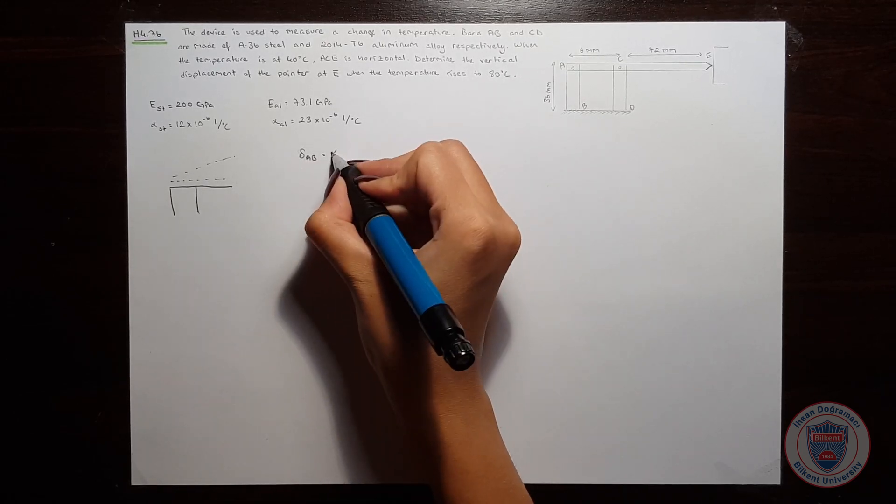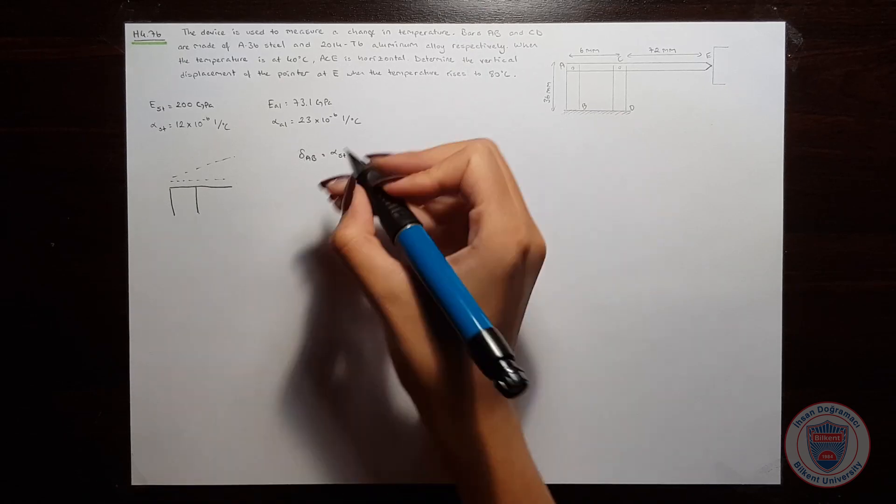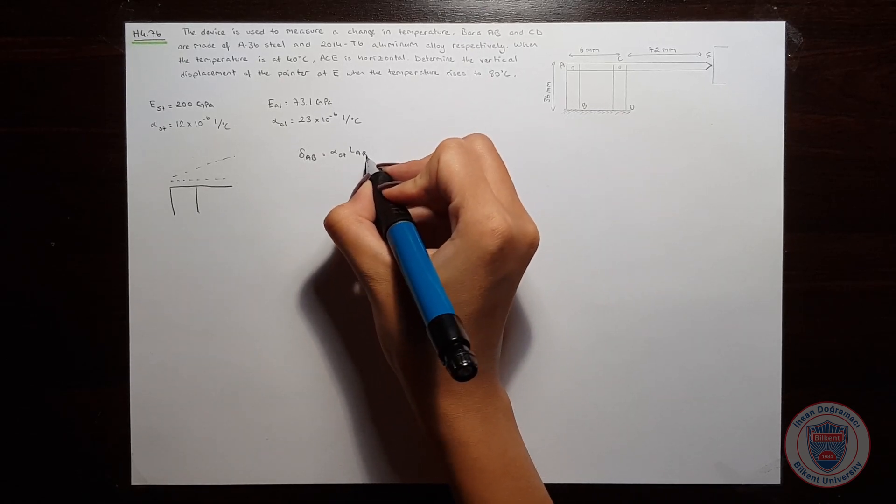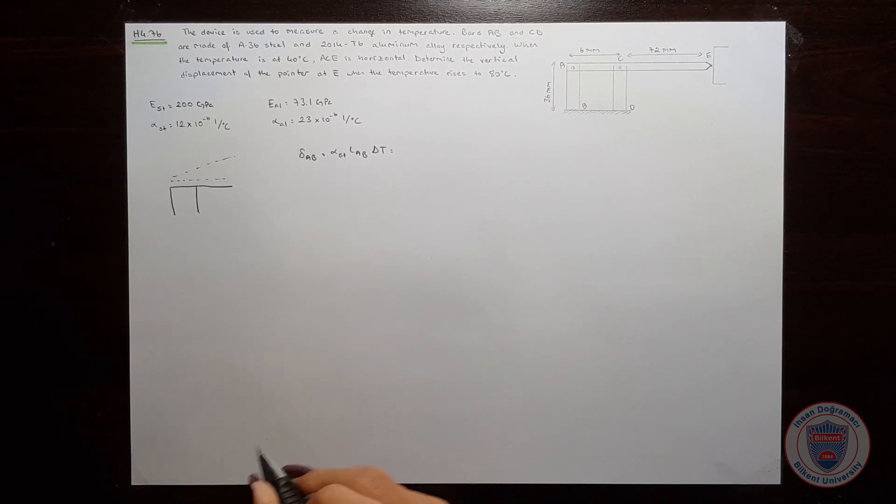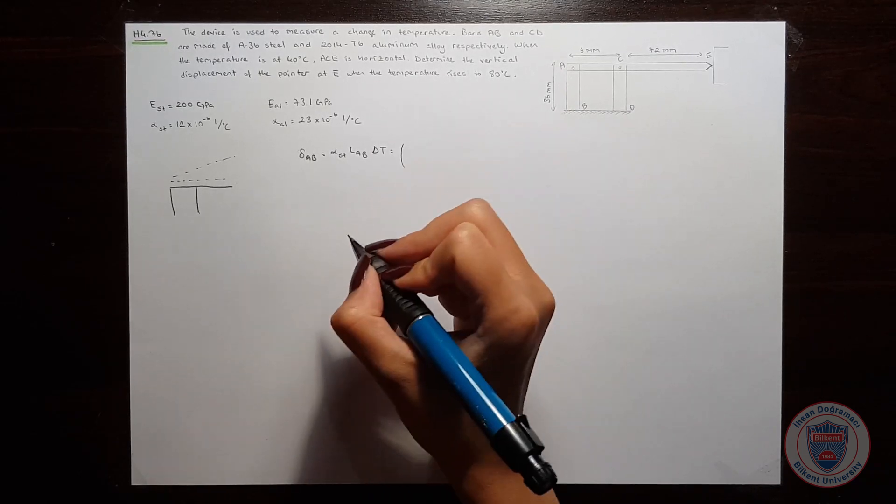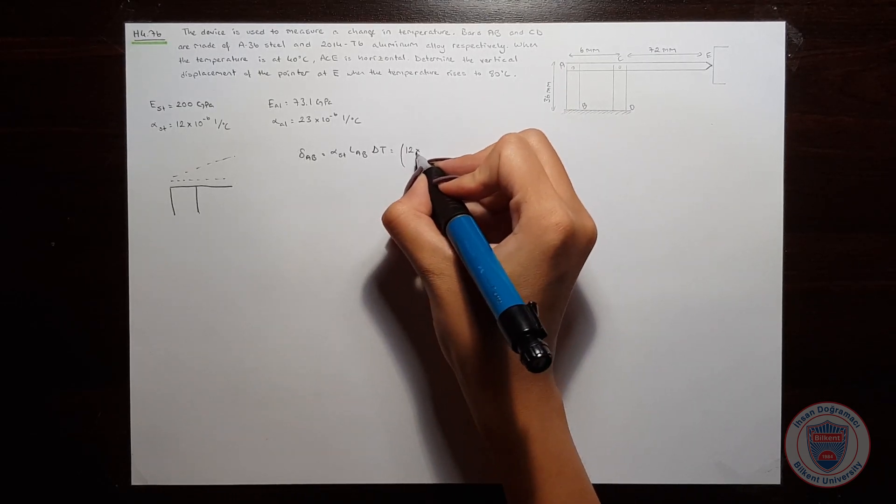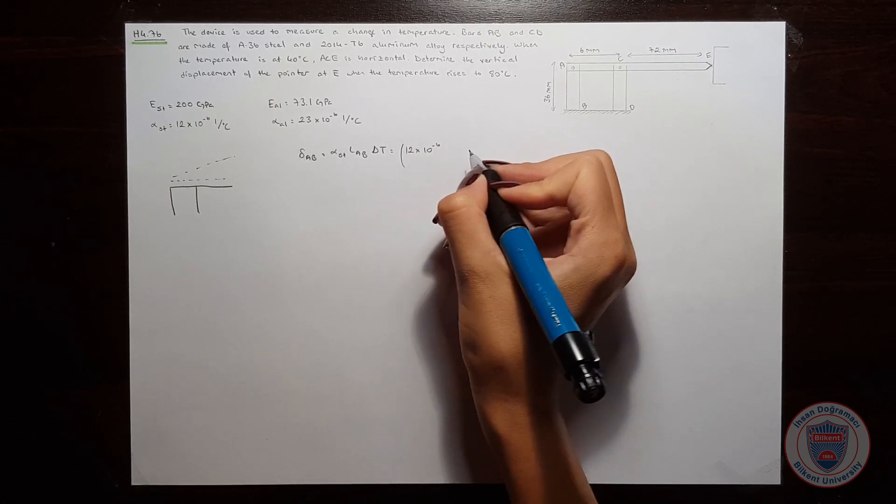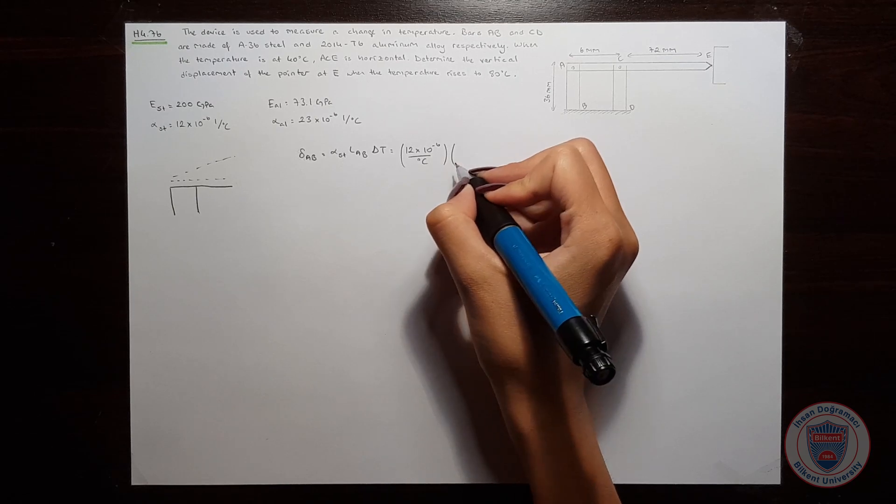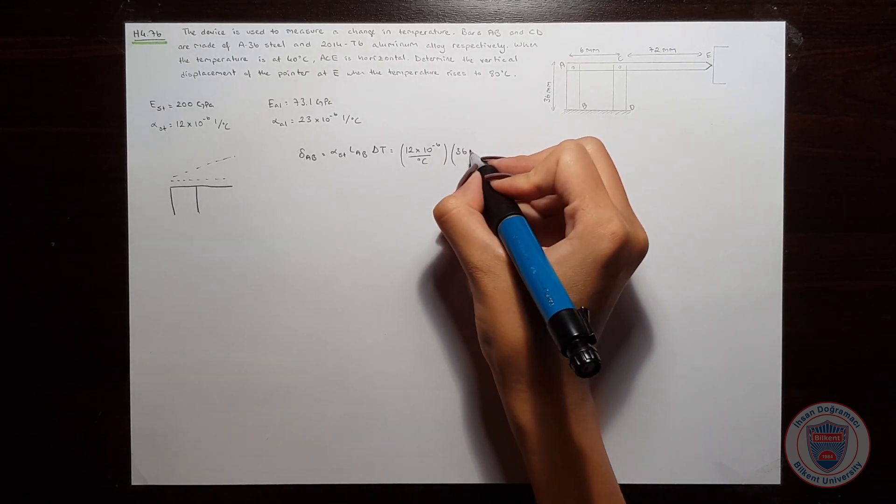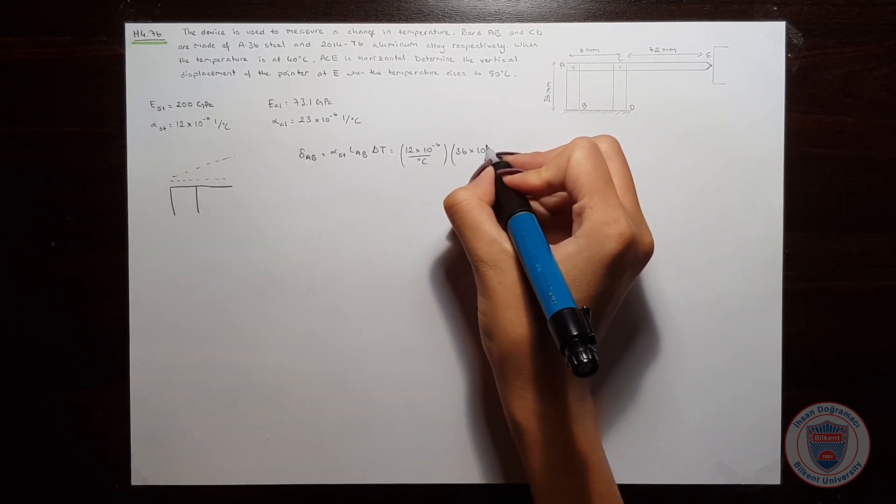It is equal to alpha steel, L_AB, times delta T. And it is 12 times 10 to the power of minus 6 times 36 meters times 40 degrees.